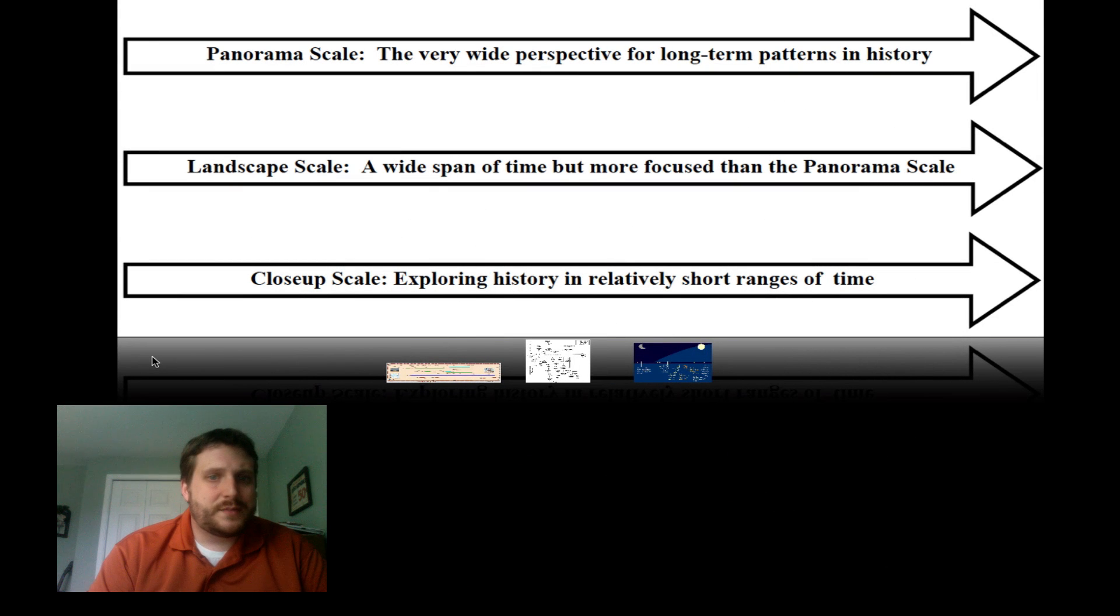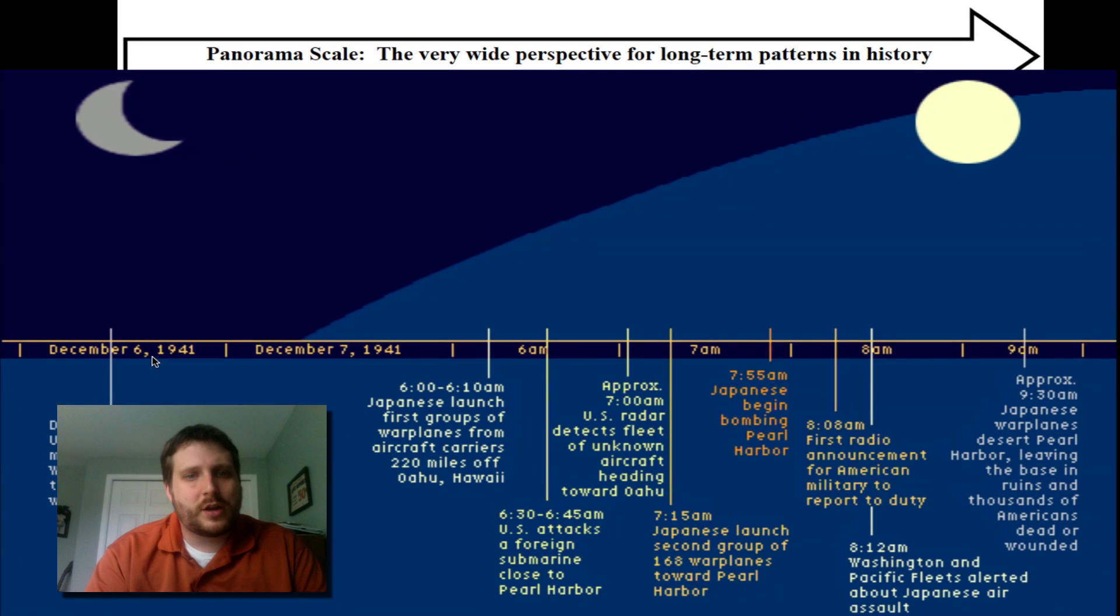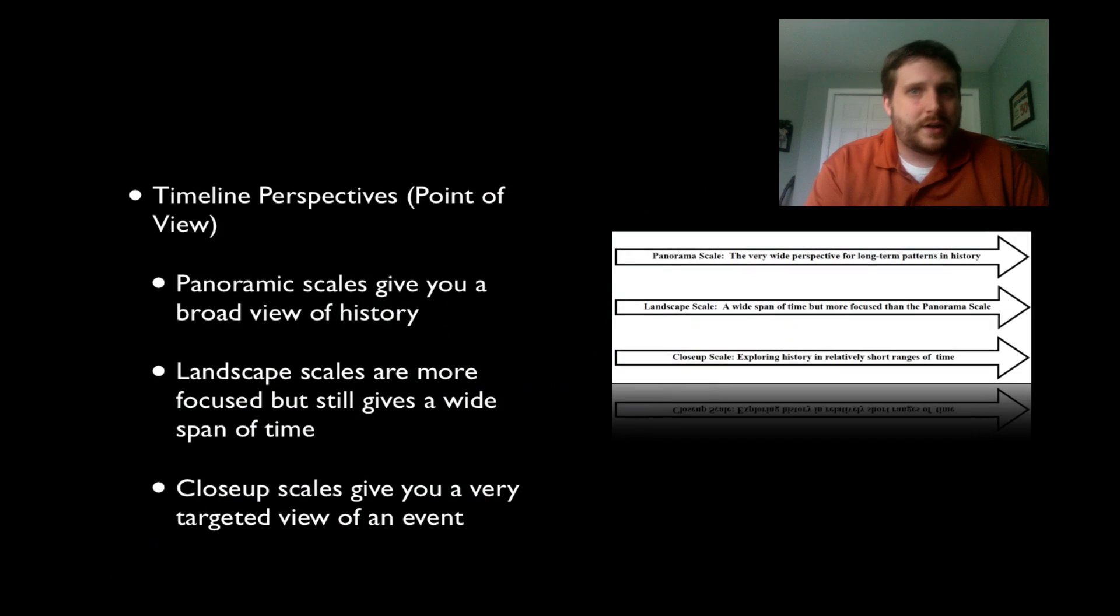And finally, we've got our close up scale, which is where you explore relatively small time frames of history. Helps us learn about individual events. So for example, the attack on Pearl Harbor, we're talking a matter of hours now. There are different perspectives, just like when we were looking at that plant, you can look at history in different perspectives. You can take a look at all of history, a huge wide view of history. And that would be our panoramic scales, where you've got thousands of years on a timeline. We've got the landscape scale, which is where it's more condensed. You're talking about a couple hundred years of time, and it gives you more specific events. And then we've got a close up scale, where it's a day, a couple of days, maybe a year, maybe an hour, where it shows all the events leading up to something. So it's a very specific thing, and you're learning a lot about a certain event.